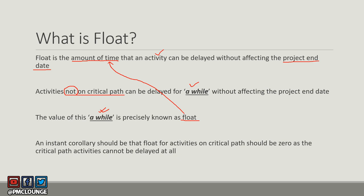A corollary here is that float for activities on the critical path will be zero, because critical path activities cannot be delayed at all — that's the whole concept of critical path. Activities on other paths can be delayed for a while, and that amount of time is known as float.